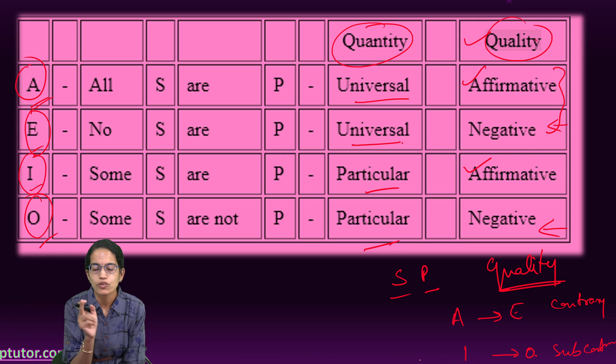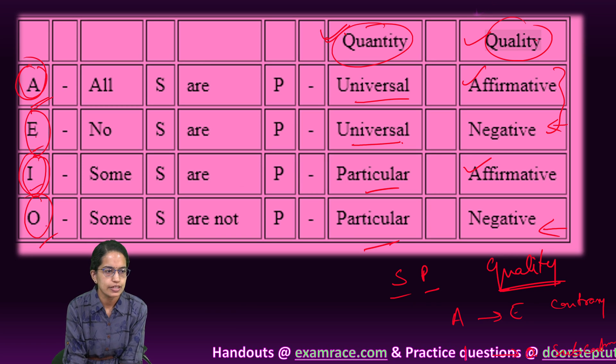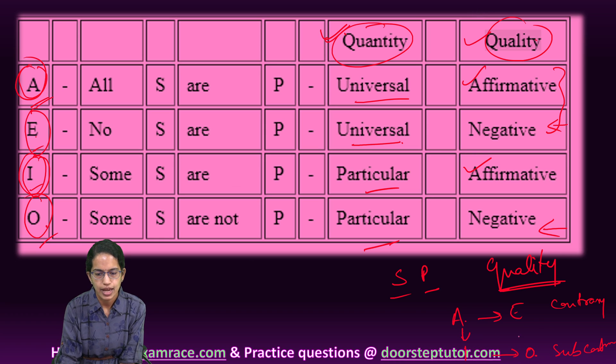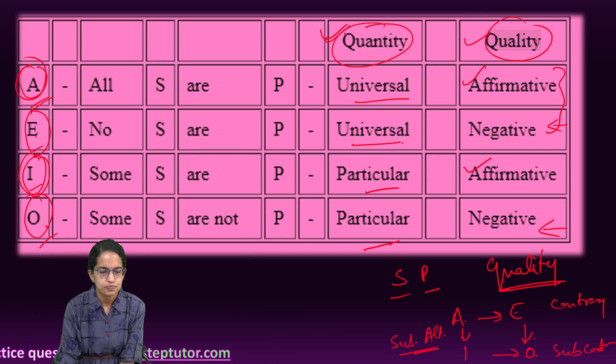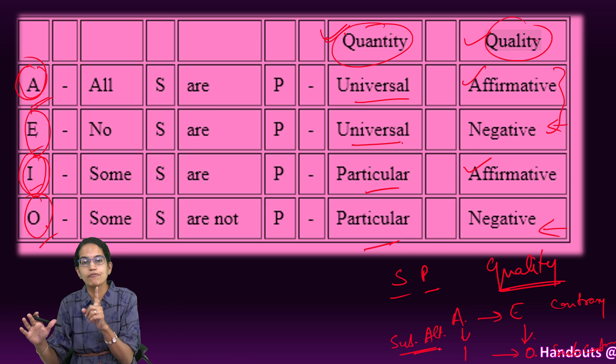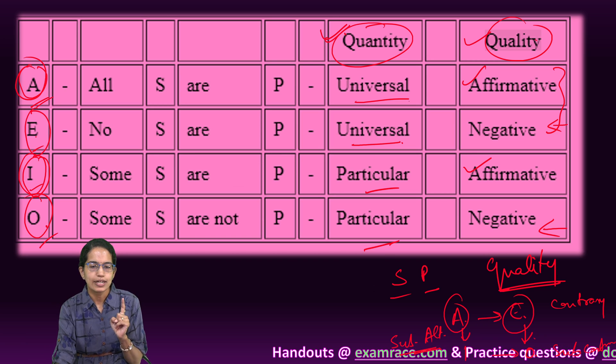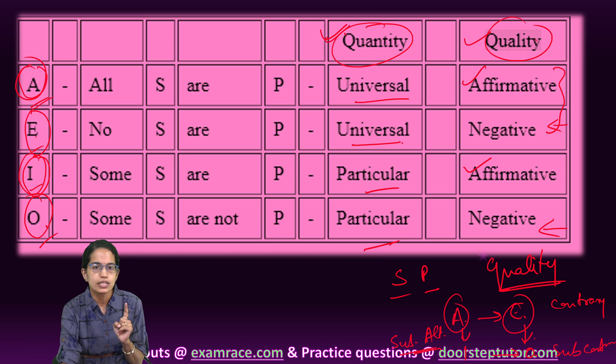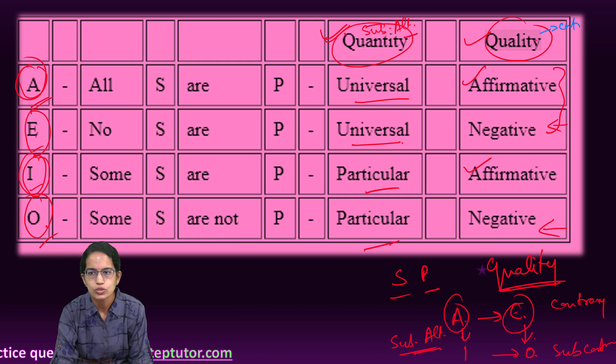Now the question says, what would be the relation if they differ in quantity? So if they differ in quantity, I have to find out the relation between A and I and E and O. So A and I and E and O, what kind of relation is this? It is subaltern relation. So when the subject and predicate of both the premises are same, but they differ only in quantity, this relation is subaltern. So if they differ in quantity, it is subaltern. If they differ in quality, it is contrary or subcontrary.